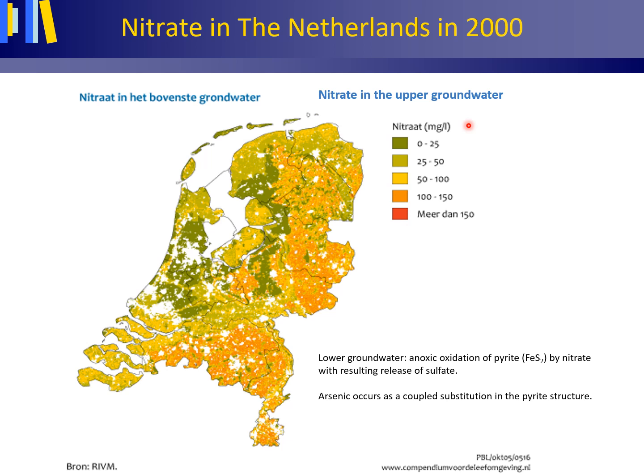This has to do with the occurrence of pyrite — iron sulfide — deeper down in the subsurface. The sulfur in pyrite oxidizes to sulfate. This oxidation is not by oxygen, which is not present deeper down in the subsurface, but by the nitrate in the groundwater. This so-called anoxic oxidation of pyrite by nitrate results in the release of sulfate. In this way, nitrate and sulfate in the groundwater effectively cancel each other out.